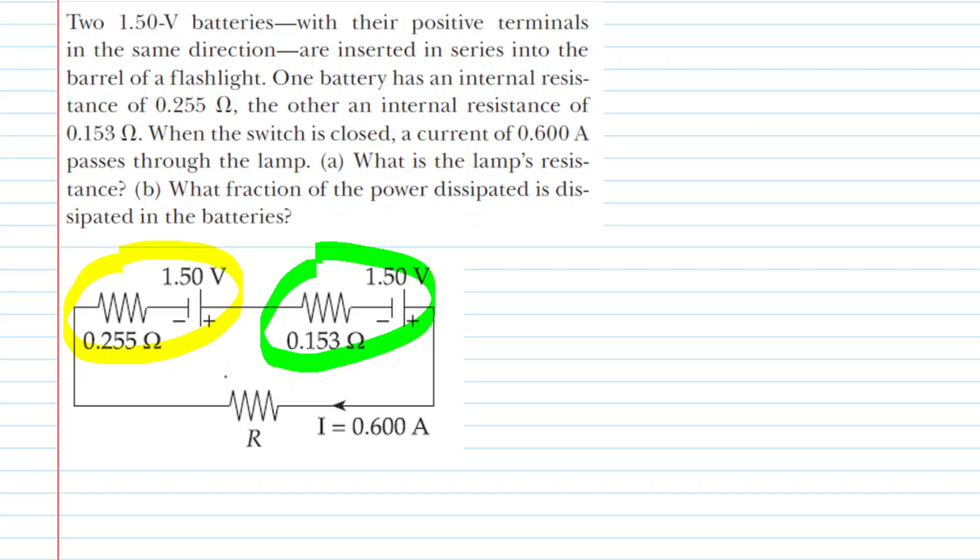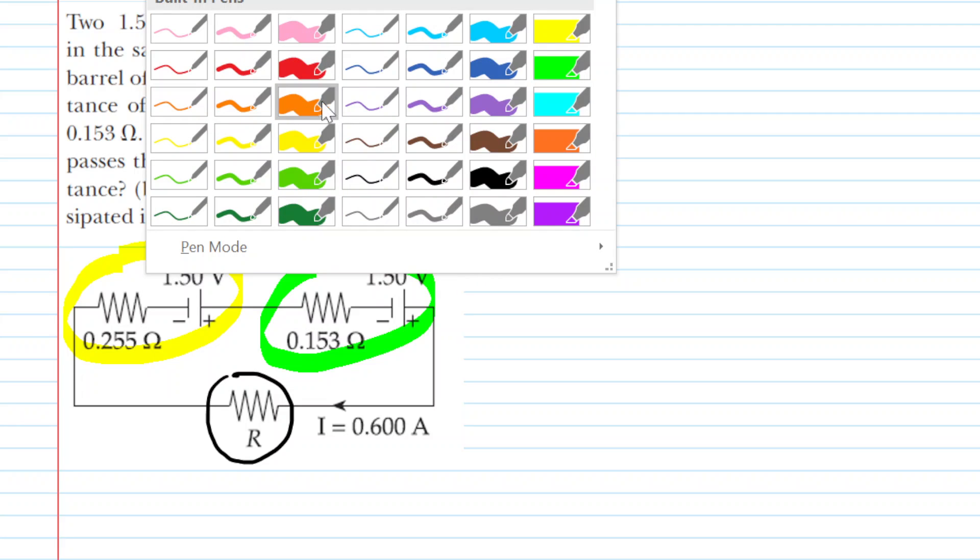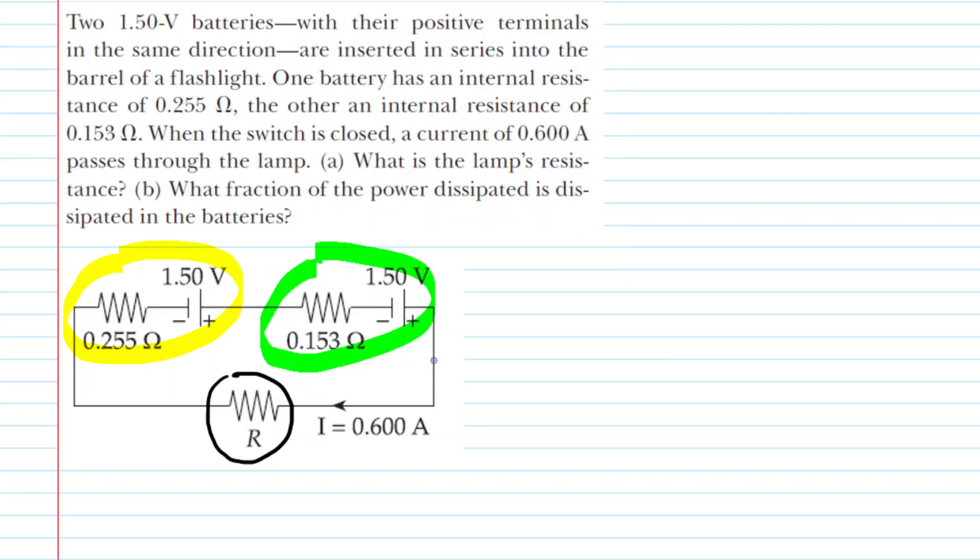Then we have this lamp with its own value of resistance that we've marked R. We have also arbitrarily drawn in a current, and we chose to draw the current traveling in this clockwise direction. So the current is traveling clockwise through the loop at all sections, so we could even draw the current up here.